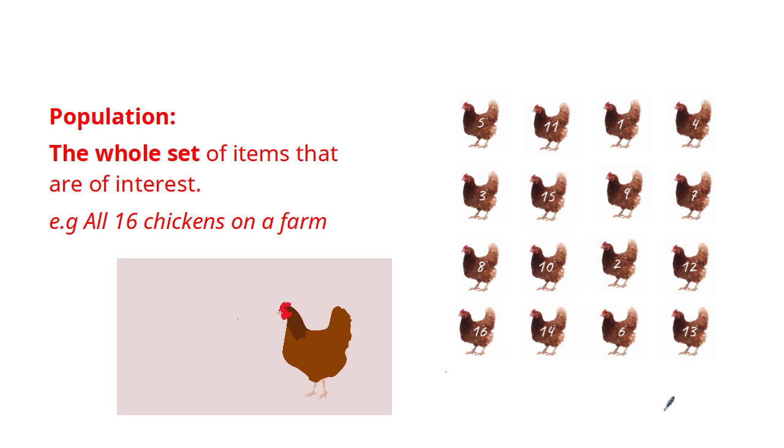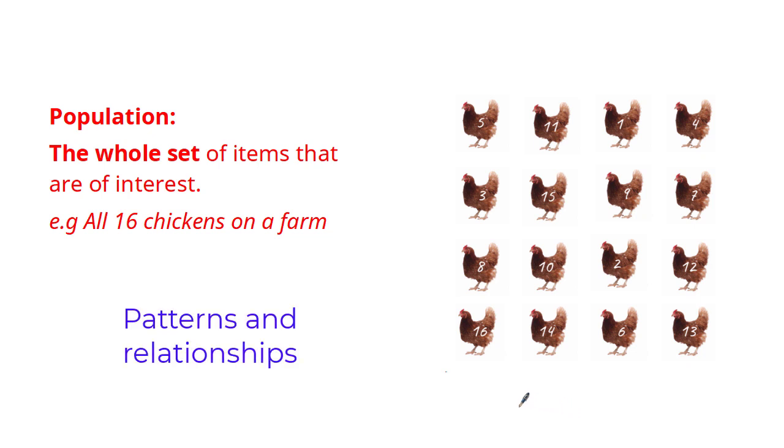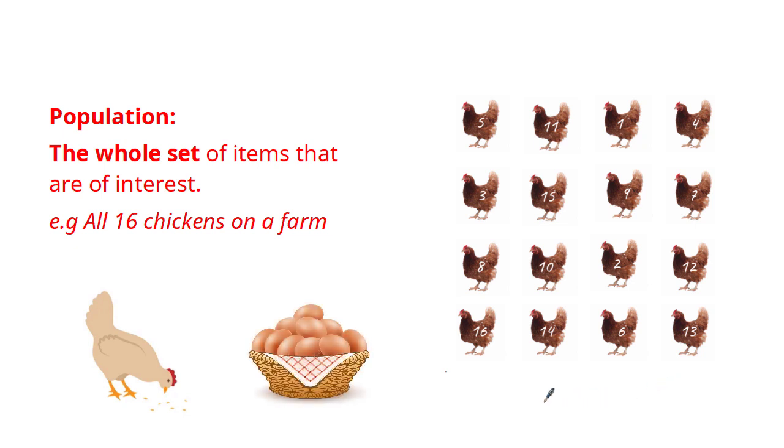For example, if this population of 16 chickens were used for egg production, then from this population we could get data about the average number of eggs laid by each chicken in the population. This would give us information used to determine the number of chickens needed to meet the demand for eggs in the market. A population is also used to understand patterns and relationships in the data. For example, if the data we're collecting is about what these chickens are eating and the egg production, it may reveal a relationship between what they eat and the eggs they produce. This could then be used to inform decisions about what type of food to feed these chickens in order to maximize their production of eggs.